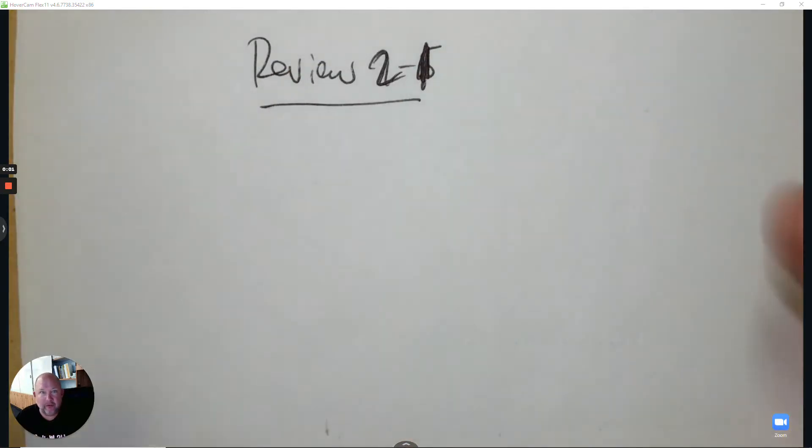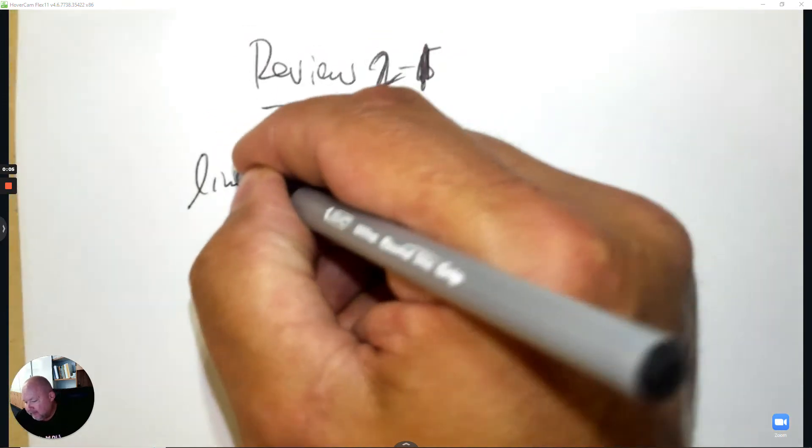Alright, this is reviewing lesson 2.1 before you take the quiz. These are limits.